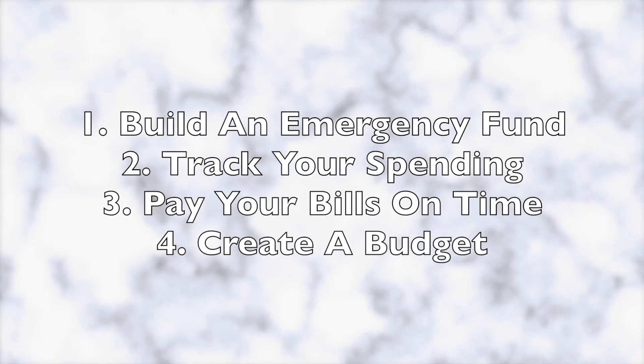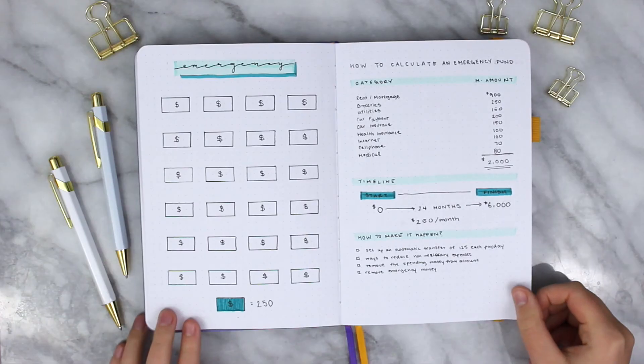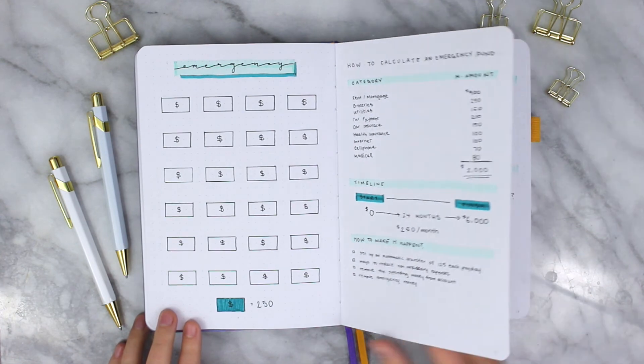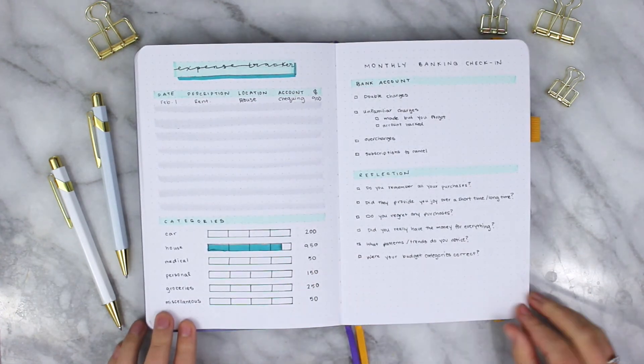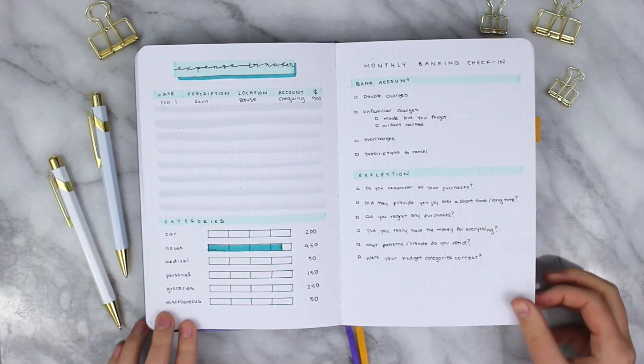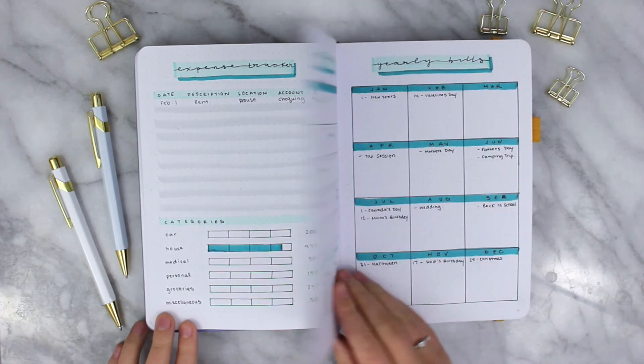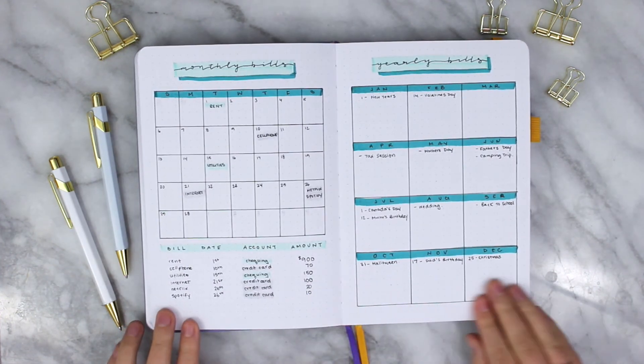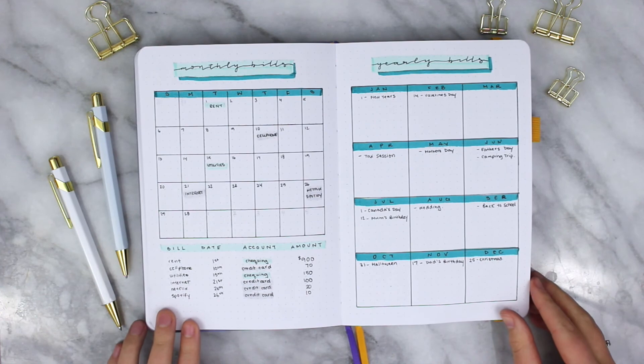Just a quick reminder, here's what we went through today: making sure we build that emergency fund, track our spendings, pay your bills on time, as well coming up with a budget. Here is just a little quick flip through of what we did today together. I really hope that this helps you in your financial self-care journey and answers the question that yes, you can use a journal for financial self-care.